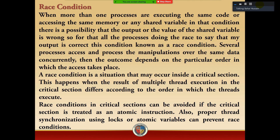Several processes access and perform manipulation over the same data concurrently. Then the outcomes depend on the particular order in which the access takes place. وہ کہتا ہے کہ several processes کر رہے ہوتے ہیں — minimal data ایک ہی وقت میں concurrently exact level پر پہنچ رہا ہوتا ہے۔ A race condition is a situation that may occur inside a critical section. This happens when the result of multiple thread execution in the critical section differs according to the order in which the threads execute.